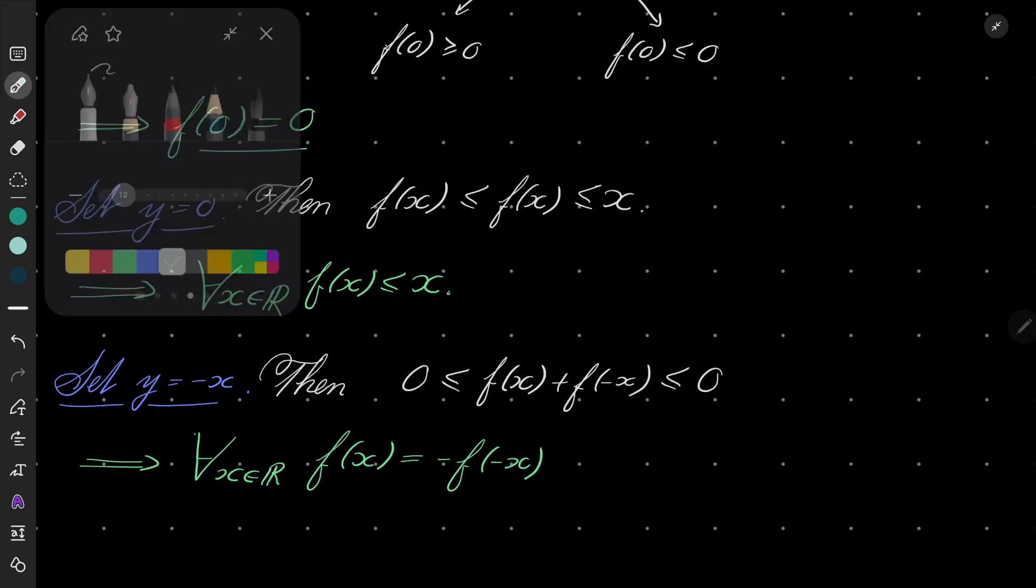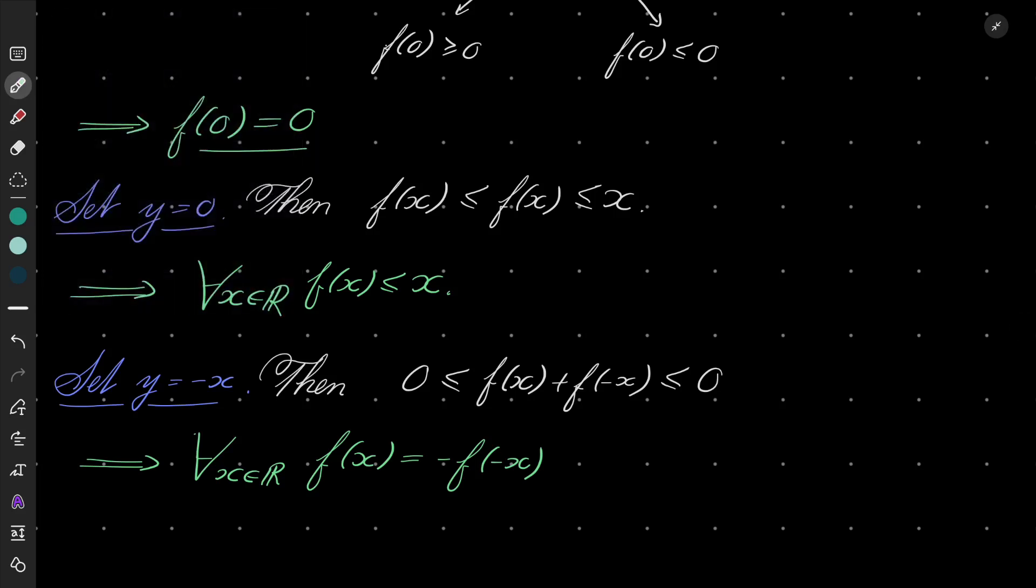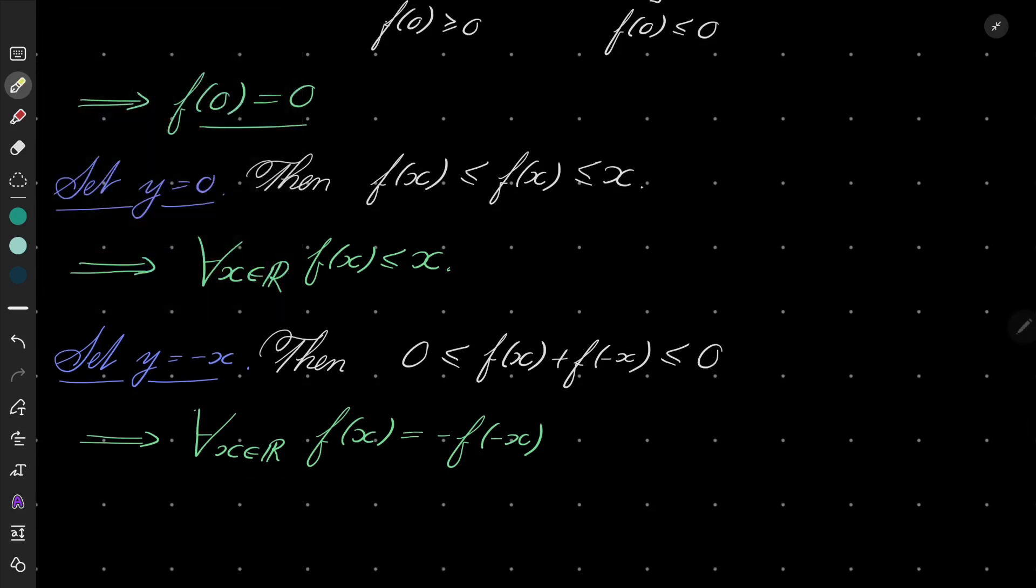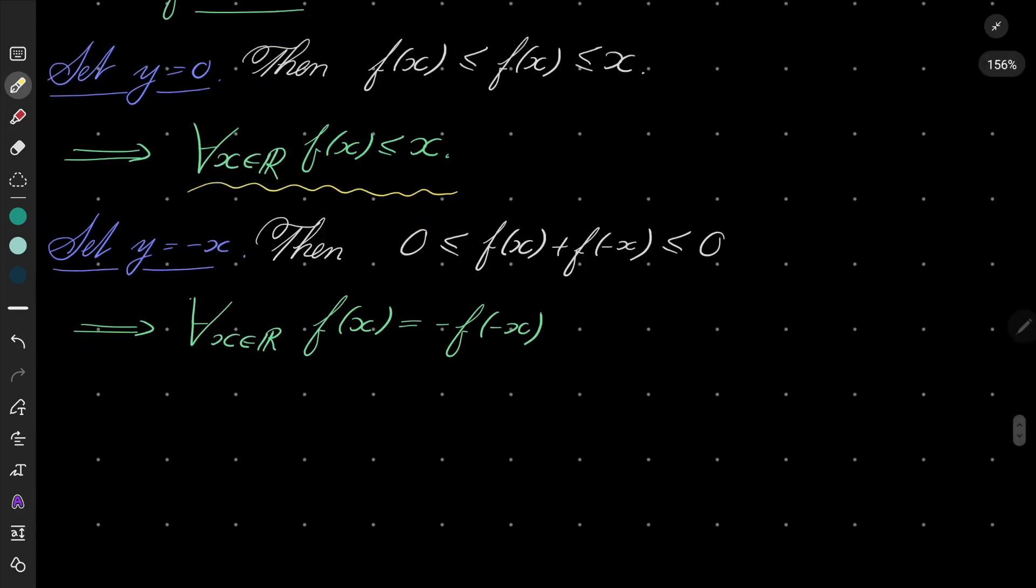Okay, and now the final step. By now we know that f(x) is always less than or equal x. The final thing to think about is, can this inequality be strict? Because if it can't, then we have our answer, namely f(x) = x. But the only problem is, can this inequality, this one, can it be strict?